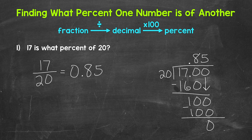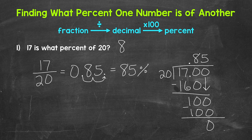Now we need to convert that decimal to a percent by multiplying it by 100. A quick way to do that is to move the decimal twice to the right — once, twice — giving us 85. So 17 is 85 percent of 20.